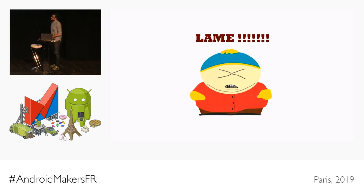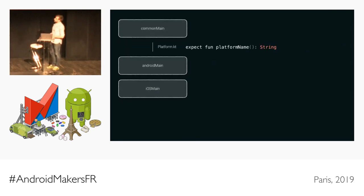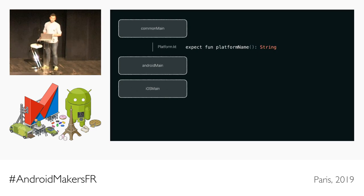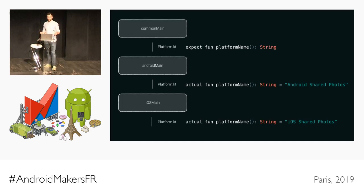Here comes a simple example. Let's say you have this library and we define one function called platformName. We want that when we call platformName from iOS and Android, we expect different values. In androidMain, the actual implementation of that string will be 'Android share photos'. And the same function when called from iOS will return 'iOS share photos'. It's a very simple example just so you see how it would actually work on a real application.